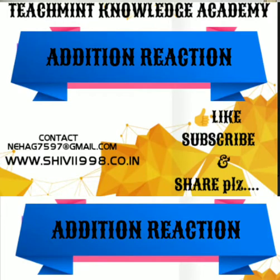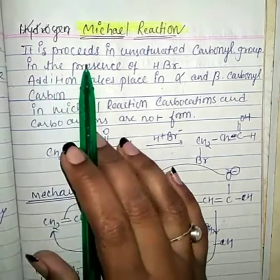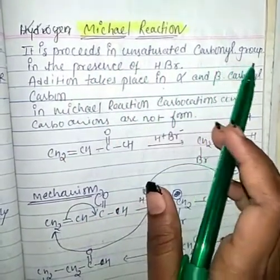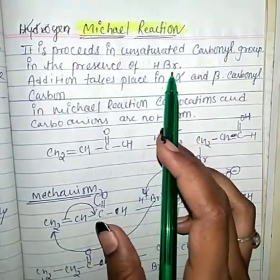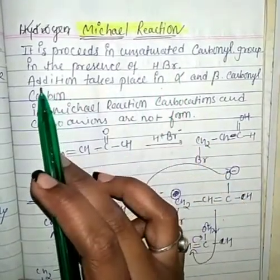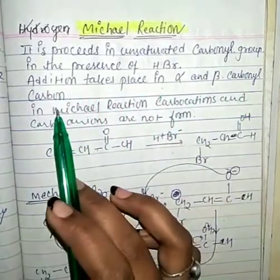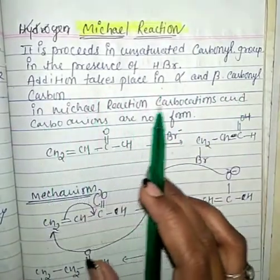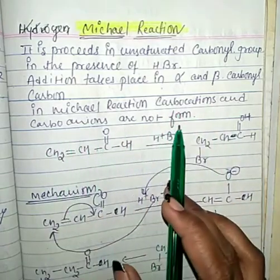Hello everyone. Our topic is Michael reaction. Michael reaction proceeds in an unsaturated carbonyl group in the presence of HBr or alkyl bromide. Addition takes place at the alpha and beta carbonyl carbon. In Michael reaction, carbocations and carbanions are not formed.